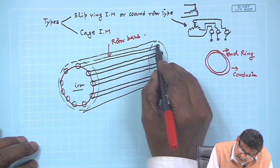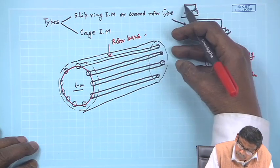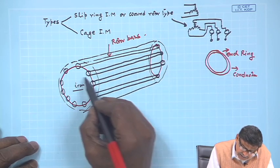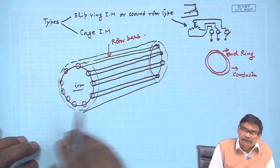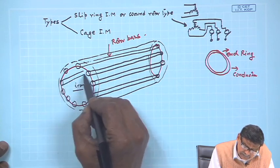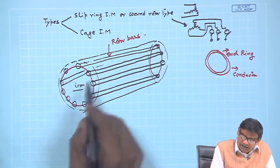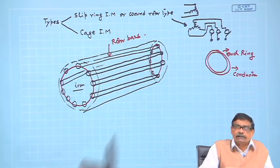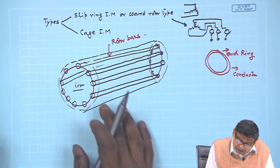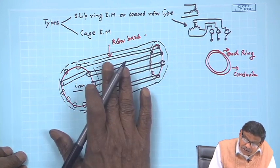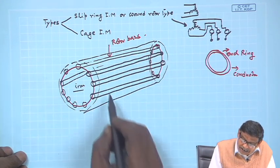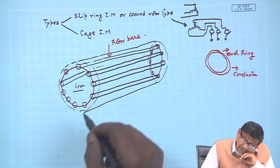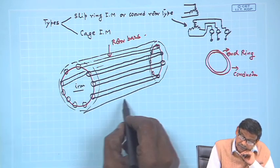Another end ring is pushed from the other end, so that all the free ends of the bars on that side are also shorted. All the bars around the rotor have their projections shorted from both sides. Without the iron, this structure looks just like a cage — they call it a squirrel cage. That is why the name 'cage rotor' is used.